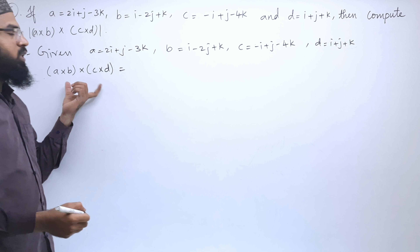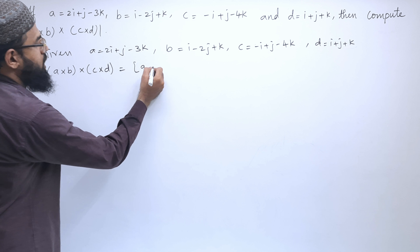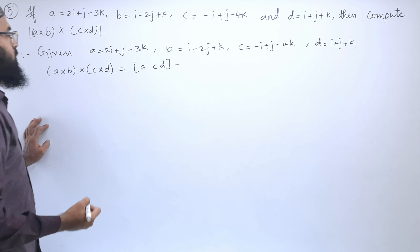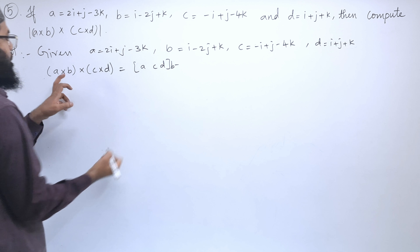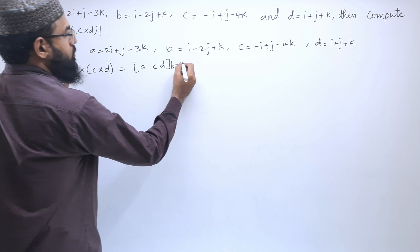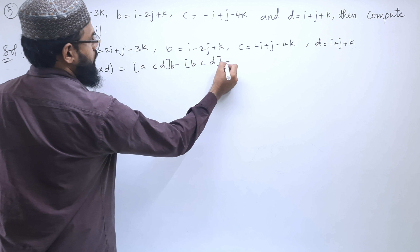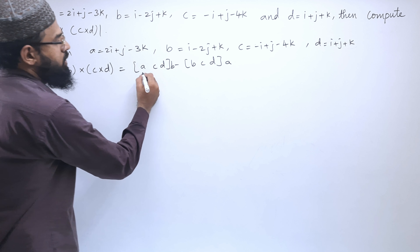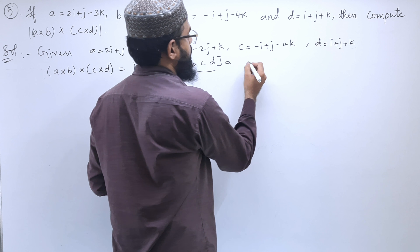The formula for (A cross B) cross (C cross D) is: box product [A, C, D] times B minus box product [B, C, D] times A. First, we will find out the box products [A, C, D] and [B, C, D]. This will be our first equation.